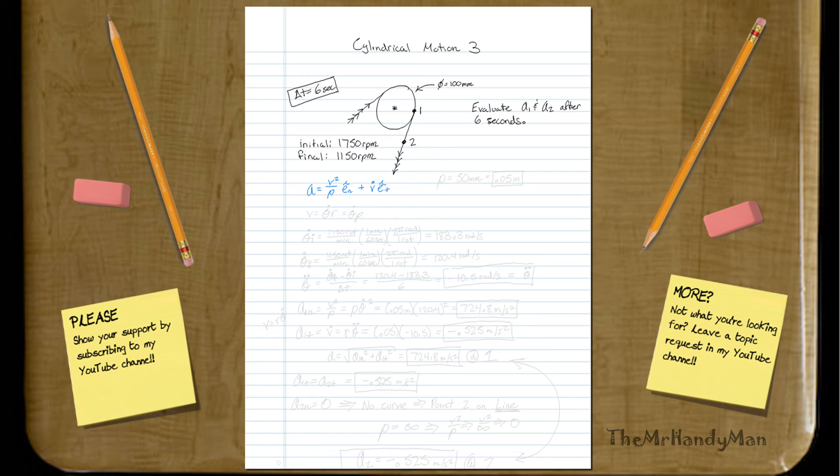First of all, we just have to look at this. What is our rho? Well, our rho will equal half of the diameter, right? So that will be 100 millimeters divided by 2. That's 50 millimeters, or 0.05 meters. Okay, so that wasn't too difficult.